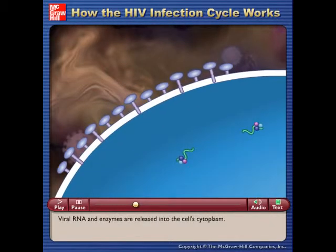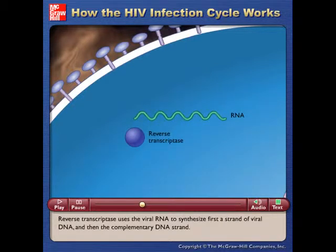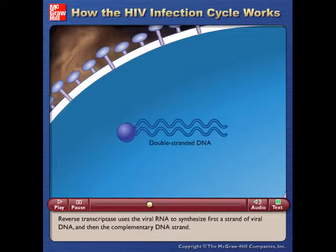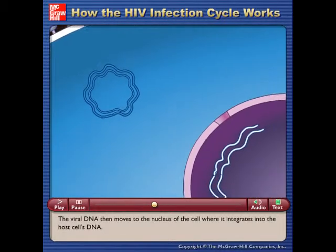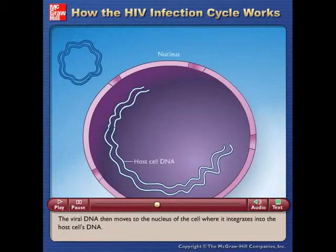Viral RNA and enzymes are released into the cell's cytoplasm. Reverse transcriptase uses the viral RNA to synthesize first a strand of viral DNA and then the complementary DNA strand. The viral DNA then moves to the nucleus of the cell, where it integrates into the host cell's DNA.